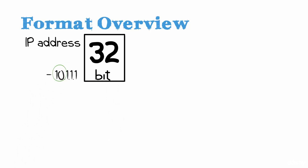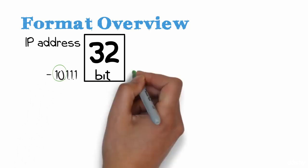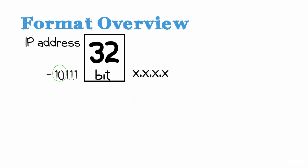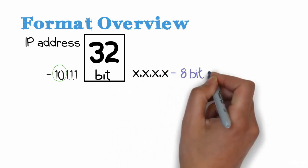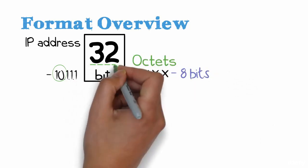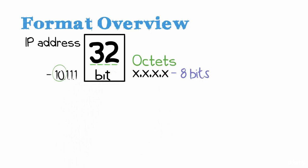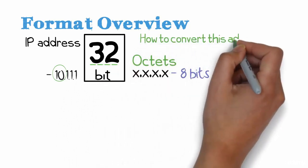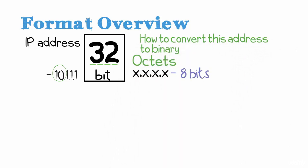So in other words, we have x.x.x.x with each x being 8 bits in length, also known as an octet. The total size of the address is 32 bits. Please refer to the binary video if you're not sure about bits and how to convert this address into binary and back again.